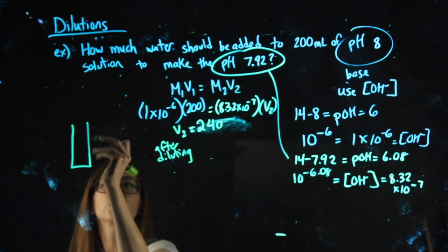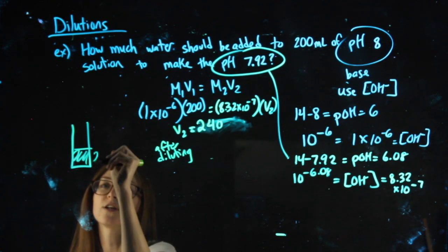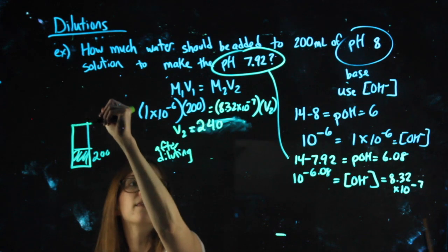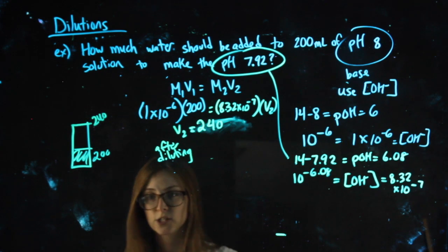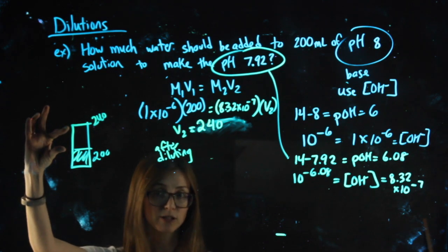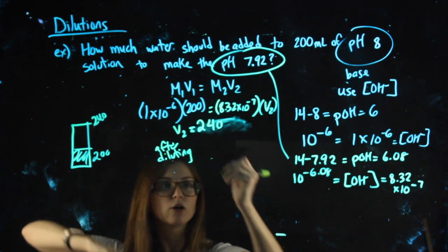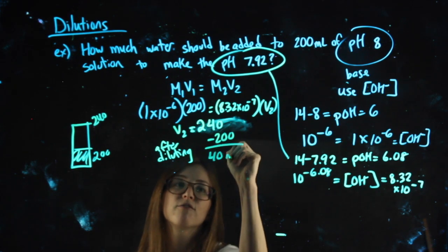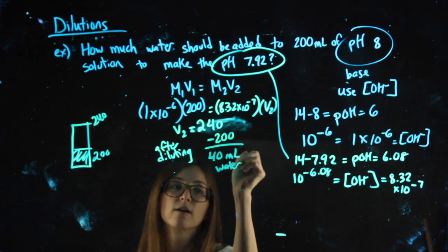If you draw a picture, if I had 200 milliliters of this stuff, then I dilute it, I end up with 240 milliliters. So what I added, the difference between those two numbers, that's what tells me how much water I added. So 240 minus the original that I started with tells me that 40 milliliters of water were added.